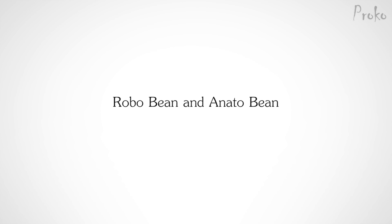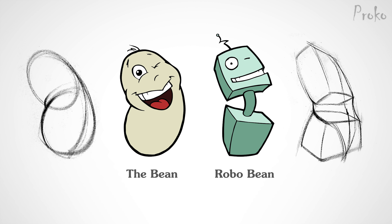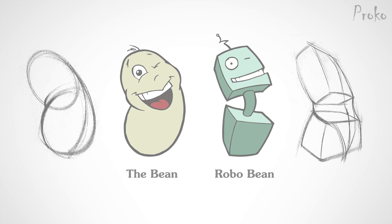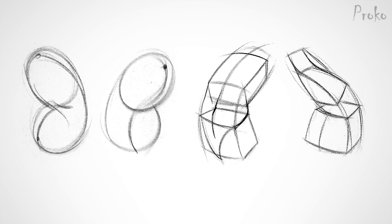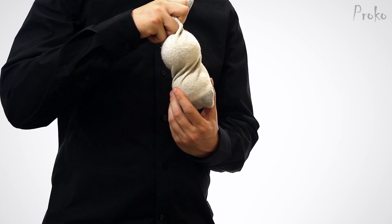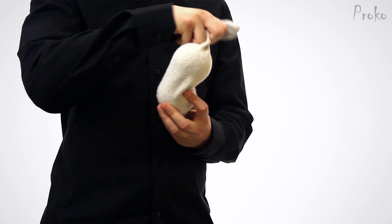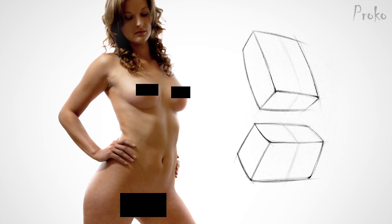Remember the bean and robo bean from the figure drawing course? A lot of the motion we drew for the pinching, stretching, and twisting was an indication of what's happening to the obliques. The bean was basically two ovals connected with skin — like two balls in a sock. The robo bean has hard corners that indicate two important skeletal landmarks: the tenth rib of the ribcage and the aces of the pelvis. These are very useful for drawing the obliques in motion.